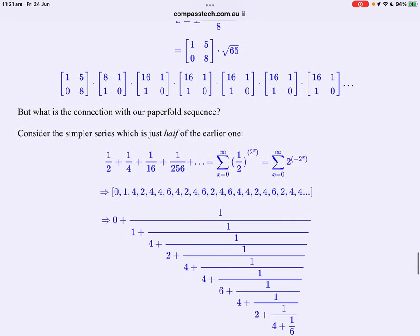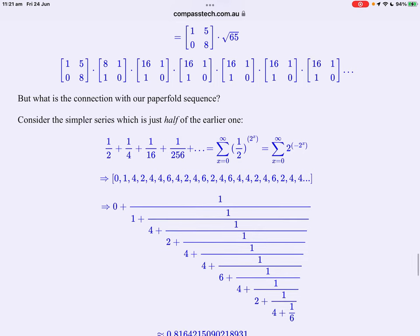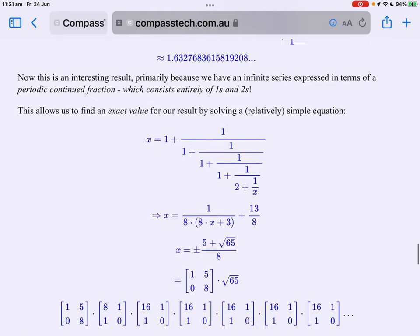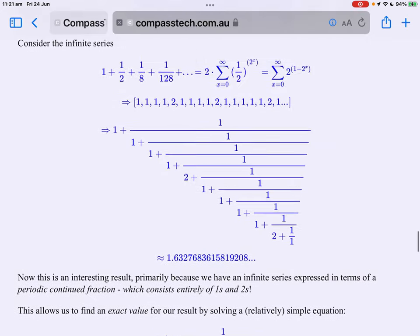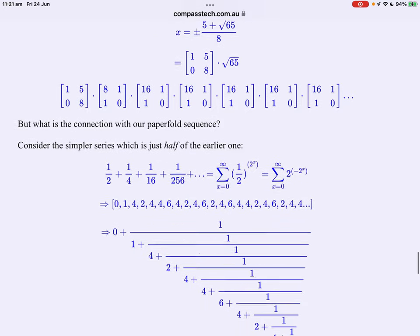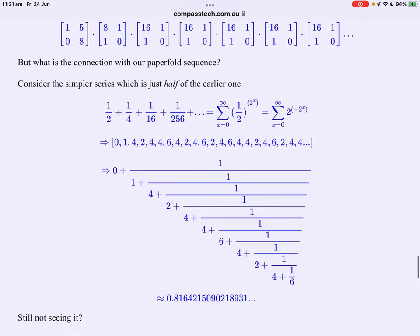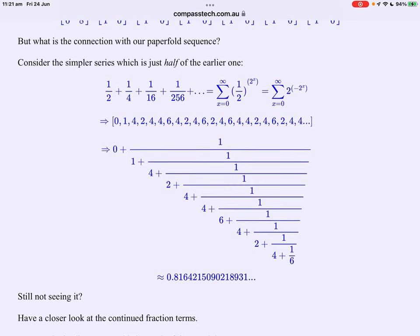So we've got a real value here but what's this got to do with our paper fold sequence? Well the trick is if we look at the sum of fractions 1, 1 1 half, 1 1 8th, 1 1 28th, take half of those, a half, a quarter, 1 16th and so on, this is now a simpler summation.